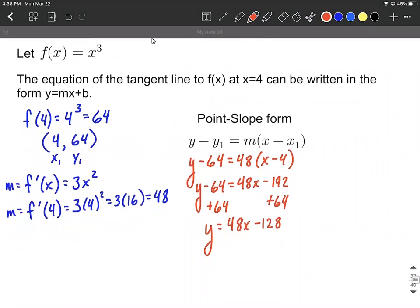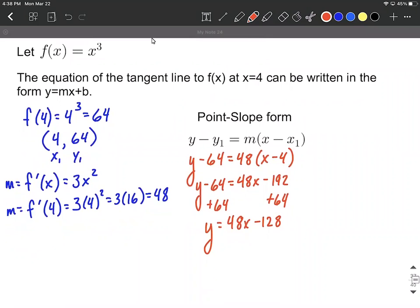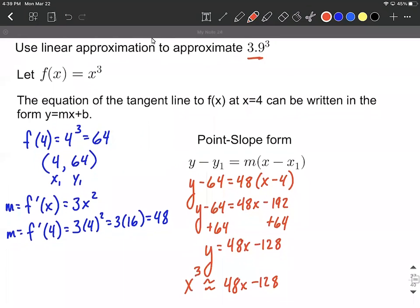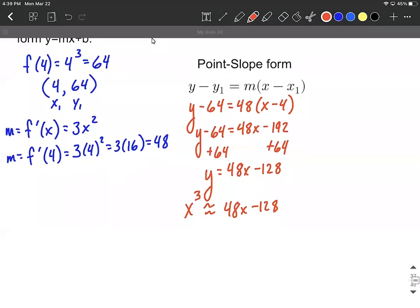We can also say that x cubed is going to be approximately 48x minus 128 at a value of x equals 4 or any value very close to it. So let's go ahead and use the x value that was given to us. The 3.9 was raised to the third power and approximate that. So we can say it's going to be y equals 48 multiplied by 3.9 minus 128 which works out to be approximately 59.2.